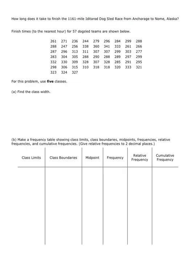The next problem in your homework set asks: how long does it take to finish the 1161 mile Iditarod dog sled race from Anchorage to Nome, Alaska? Finish times to the nearest hour for 57 dog sled teams are shown below. For this problem, use five classes. Now, of course, when the data gets a little bit more cluttery, we have to be careful to identify the highest and smallest.